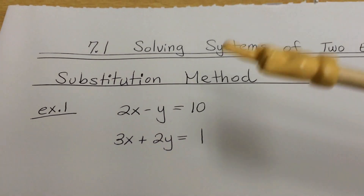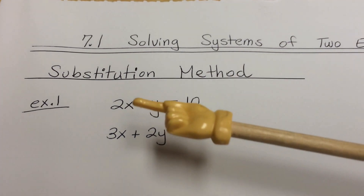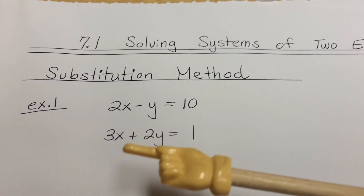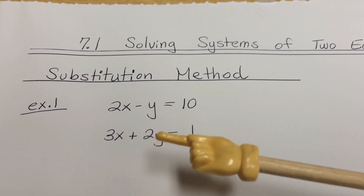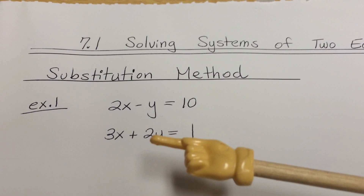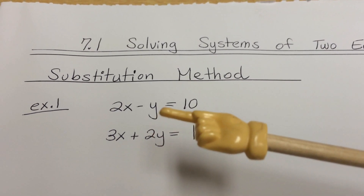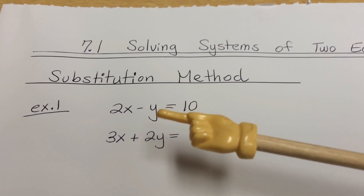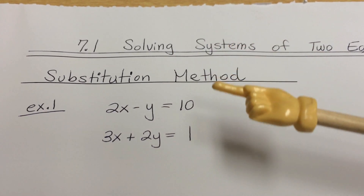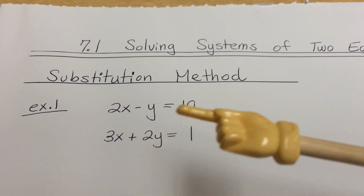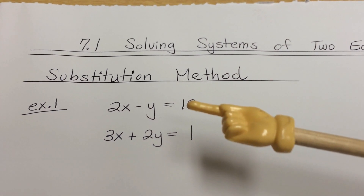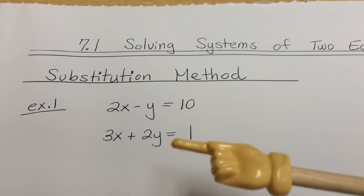Here's a clue: if you look at the coefficients, usually you want to find one that has a value of 1 — that's probably the easiest approach. If you have a coefficient of 1, like this y right here, I can bring the 2x over to the other side of the equal sign, get rid of the negative, and substitute from the first equation into the second equation.